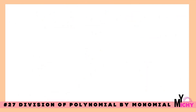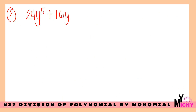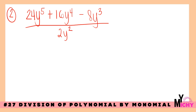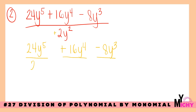Let's have another example — number 2. We have 24y raised to the 5th plus 16y raised to the 4th minus 8y cubed, divided by 2y squared. We separate it into three terms, and divide each by the divisor 2y squared.